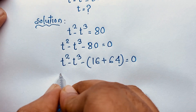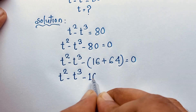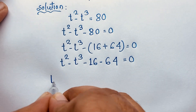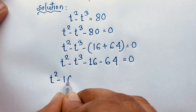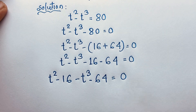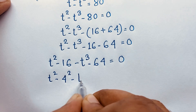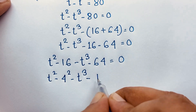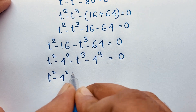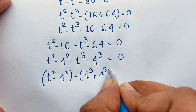Now here, t to the power 2 minus t to the power 3, minus 16 minus 64 is equal to 0. So t to the power 2 minus 16, then t to the power 3 minus 64 is equal to 0. This becomes t to the power 3 plus 4 to the power 3 is equal to 0. This is t to the power 2 minus 4 squared, and I take a minus sign as common, so it will be t to the power 3 plus 4 to the power 3 is equal to 0.